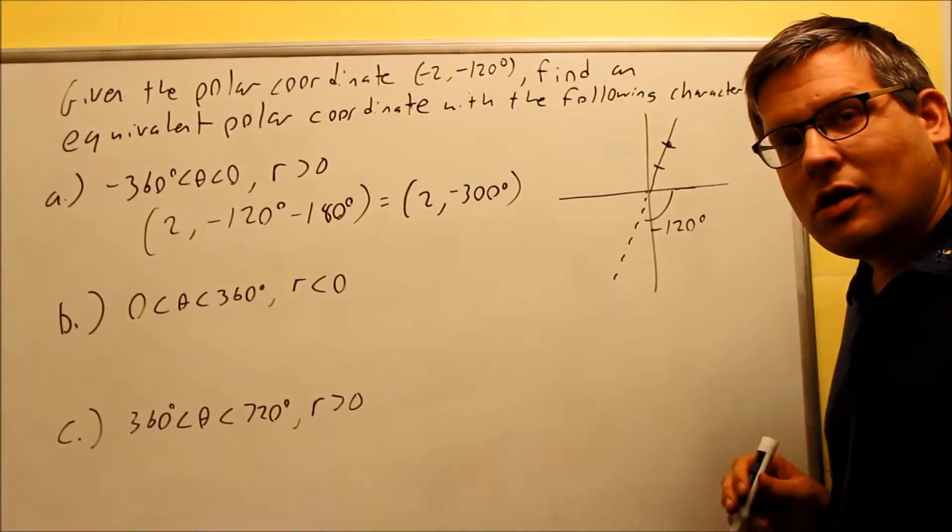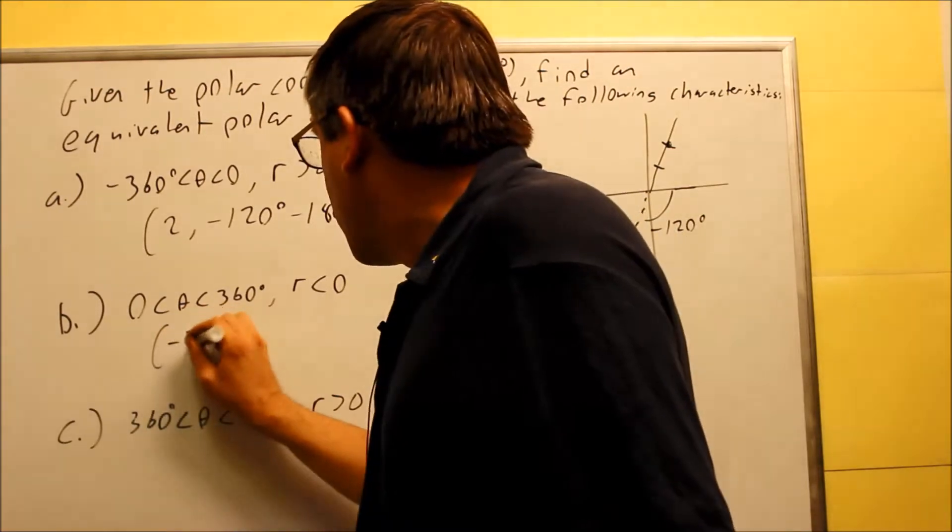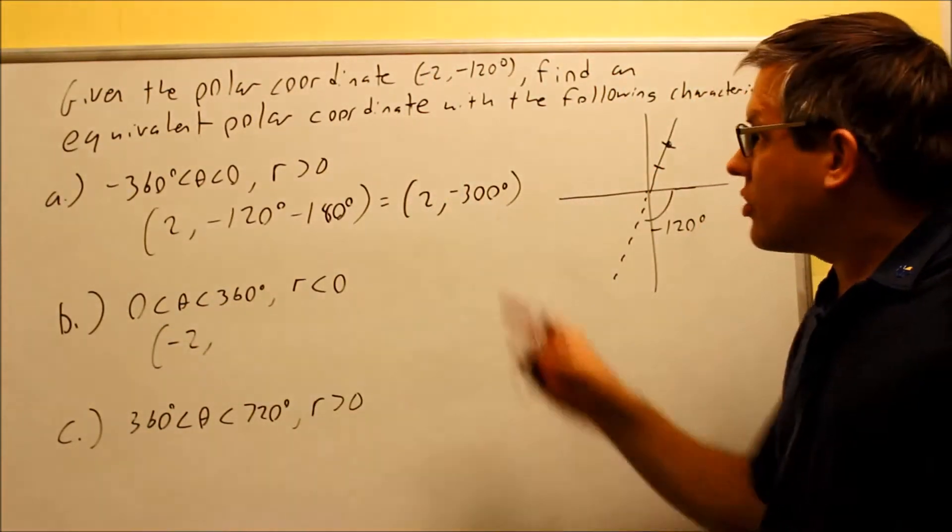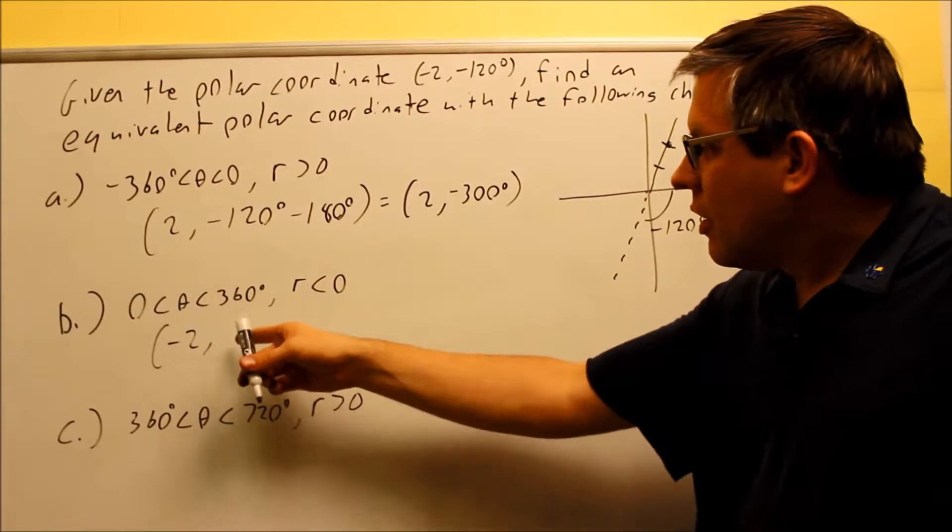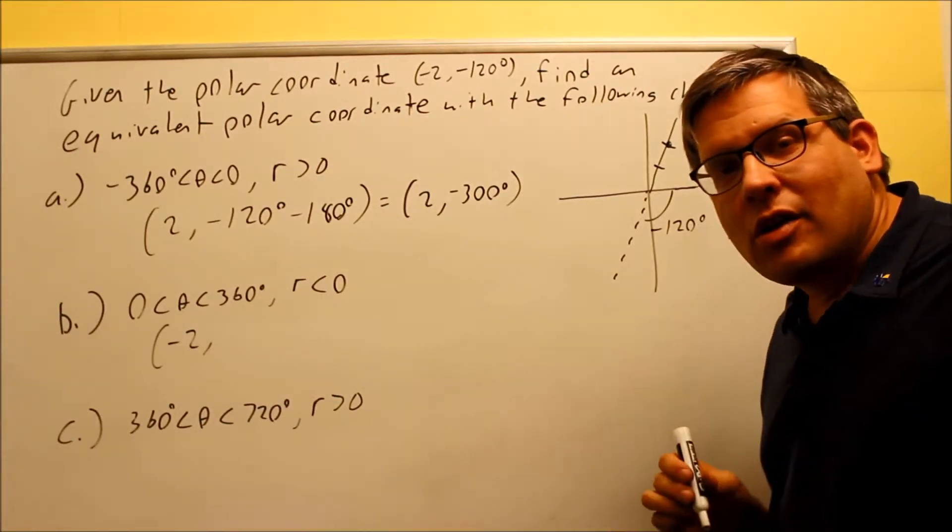Next, we'll do this one. I want the r to be less than 0. Okay, well, the r was already less than 0 there. It's already negative initially. So this time, I'm not changing the sign of the r, which means I want to add or subtract 360.